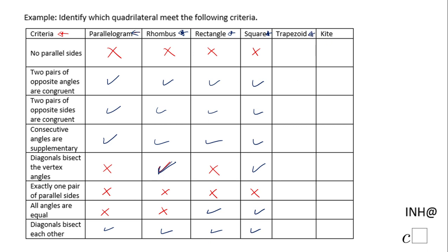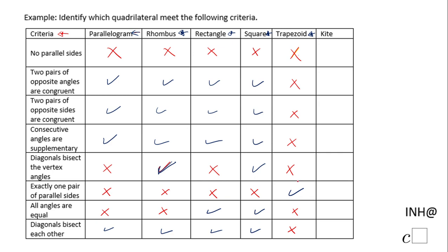Next is the trapezoid. The trapezoid is a special quadrilateral, and by definition it has exactly one pair of parallel sides — so that property works. 'No parallel sides' — wrong. 'Two pairs of opposite angles are congruent' — false. 'Two pairs of opposite sides are congruent' — no. 'Consecutive angles are supplementary' — not really, only the base angles. 'Diagonals bisect the vertex angles' — no. 'All angles are equal' — no. 'Diagonals bisect each other' — no.